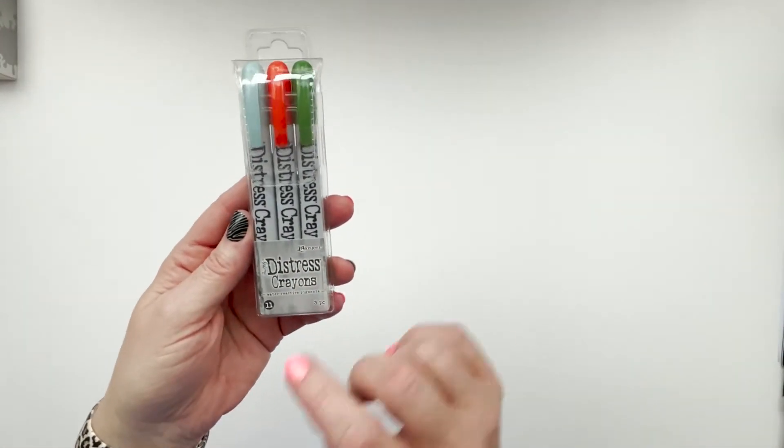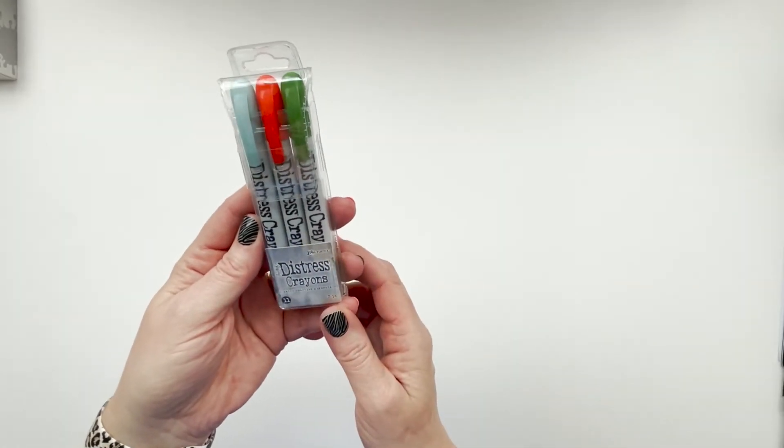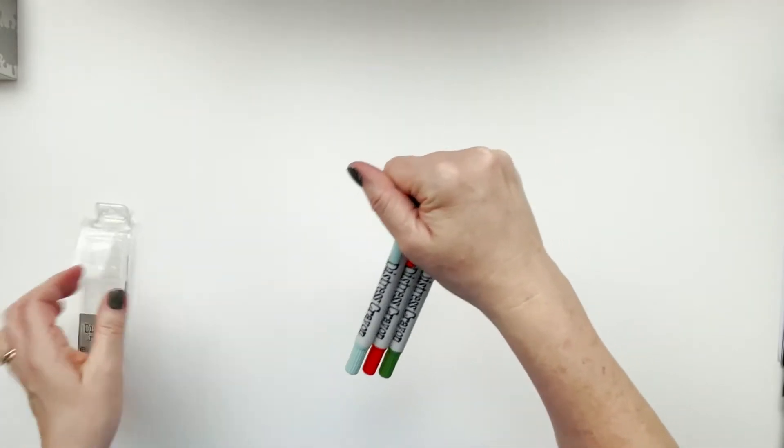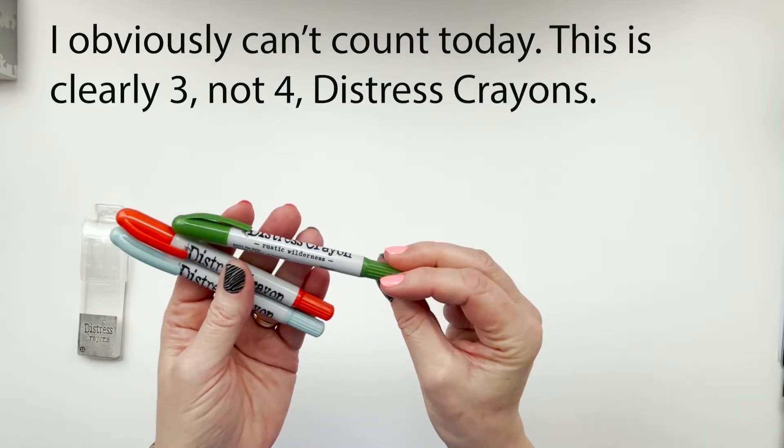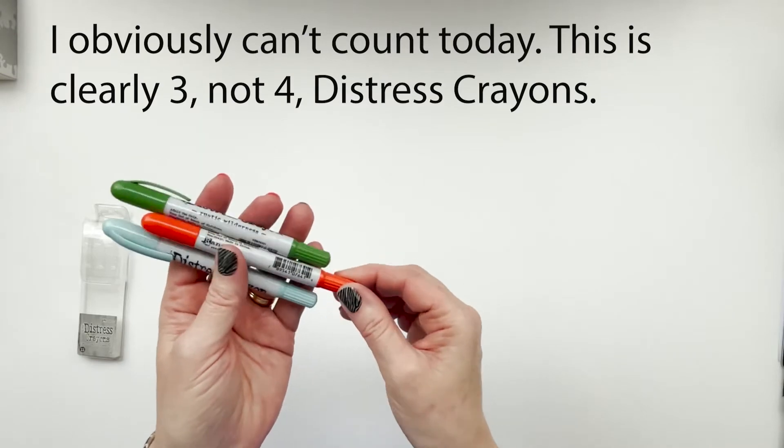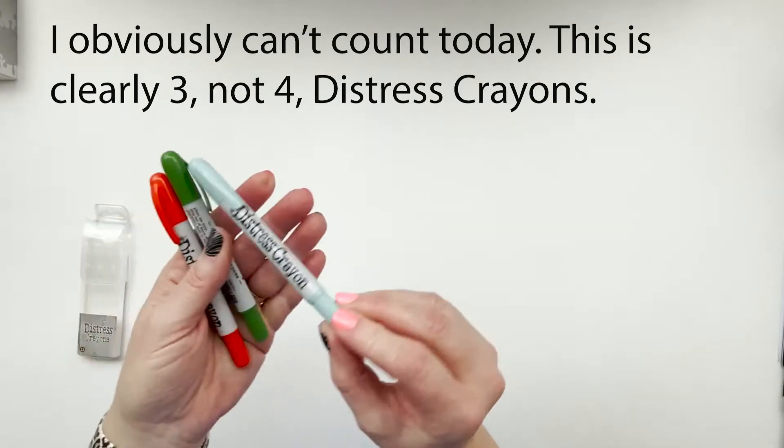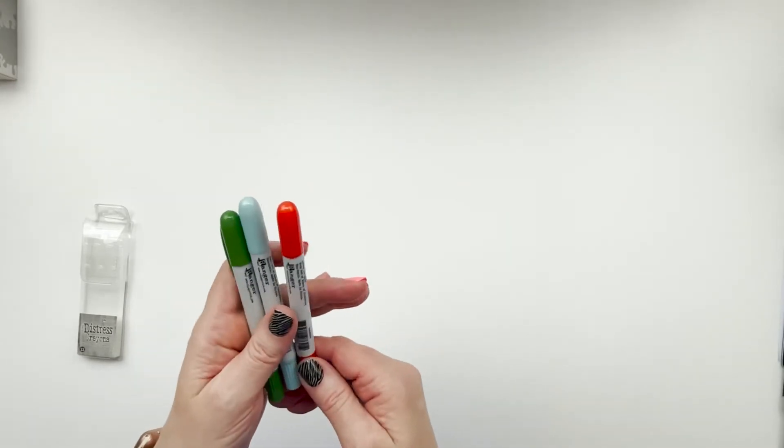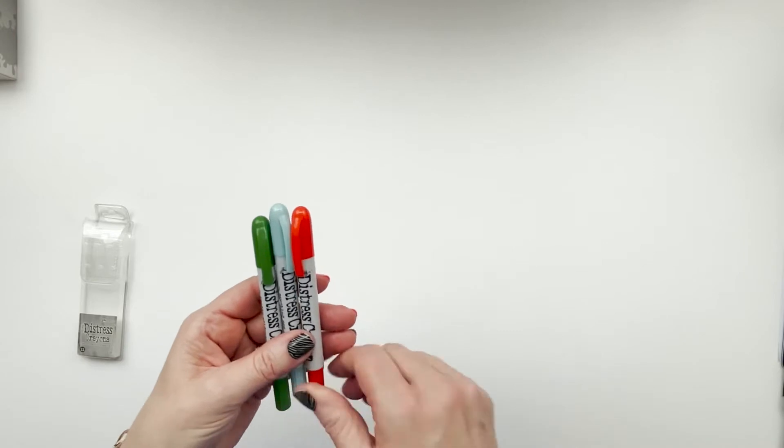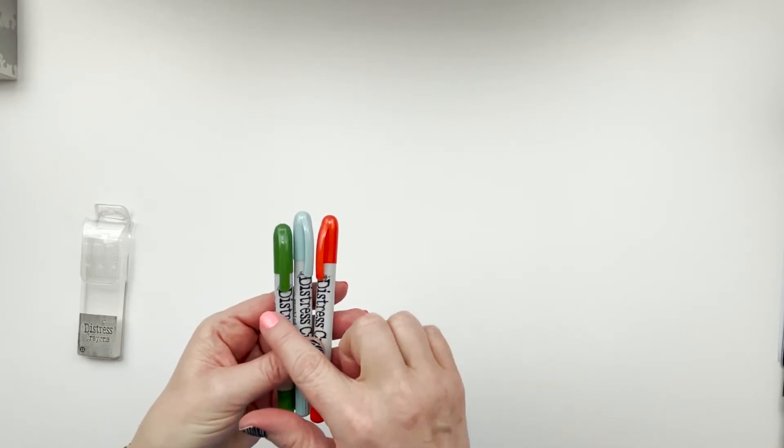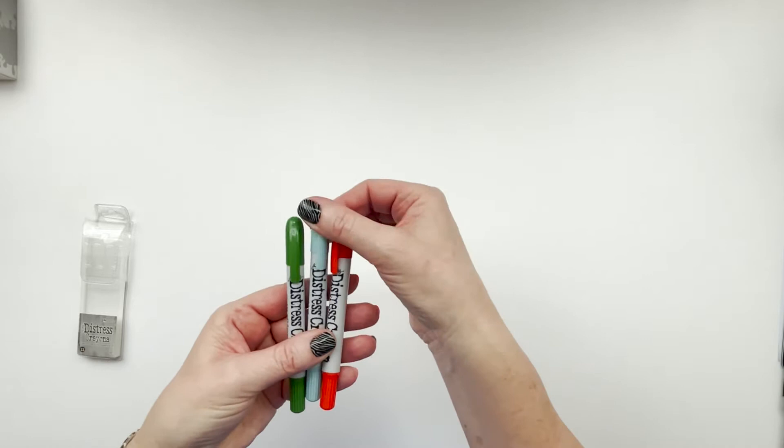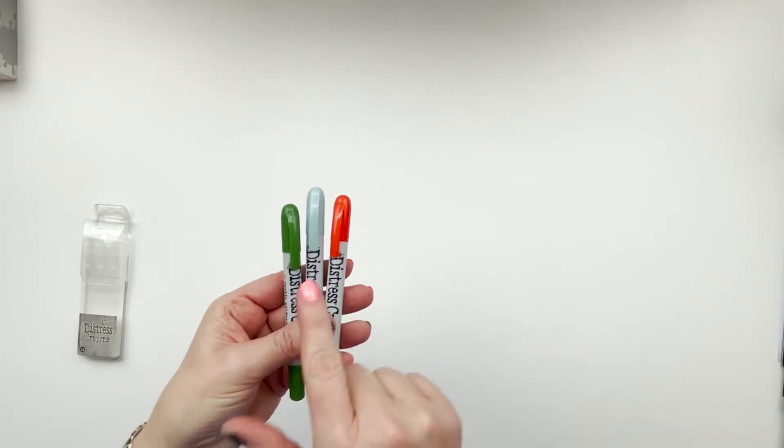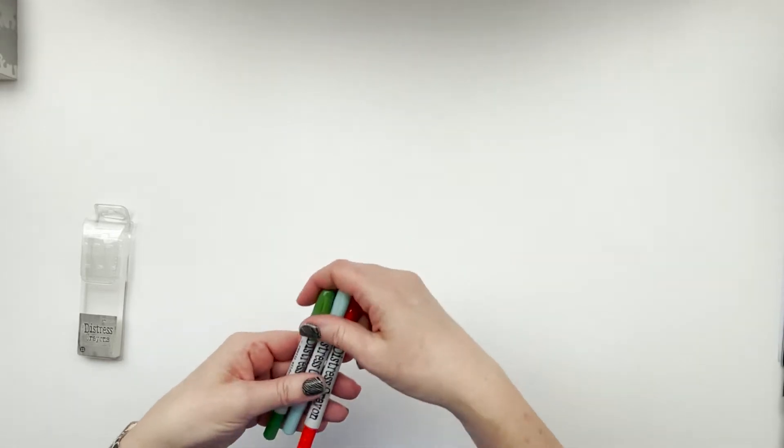The next thing, also from Ranger, I do not have any distress crayons, or I did not until this. And this is the four latest colors, so you've got the rustic wilderness, crackling campfire, and then the speckled egg. I've seen a lot of people use them and I thought they would be great to try. With these colors, with Christmas coming up, I like all three of these colors to me represent Christmas, because I think you can use this blue shade, the speckled egg, just about any time of the year. So I'm interested to play with those and see how that works out.